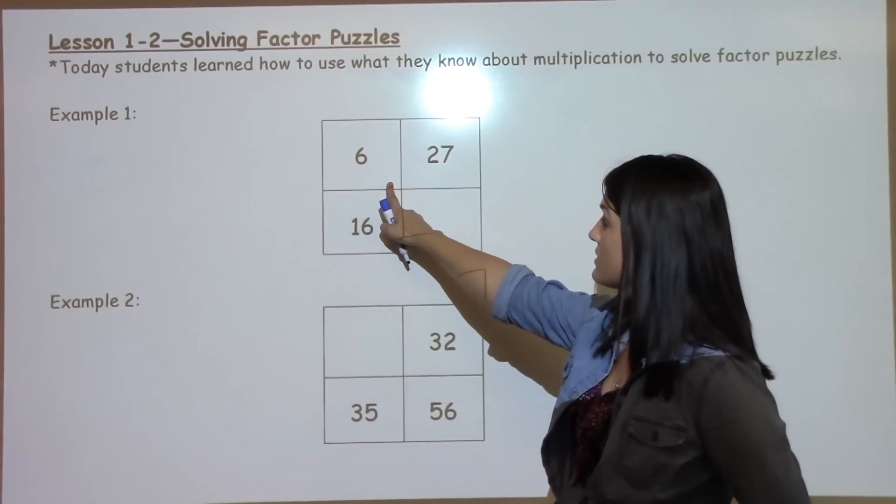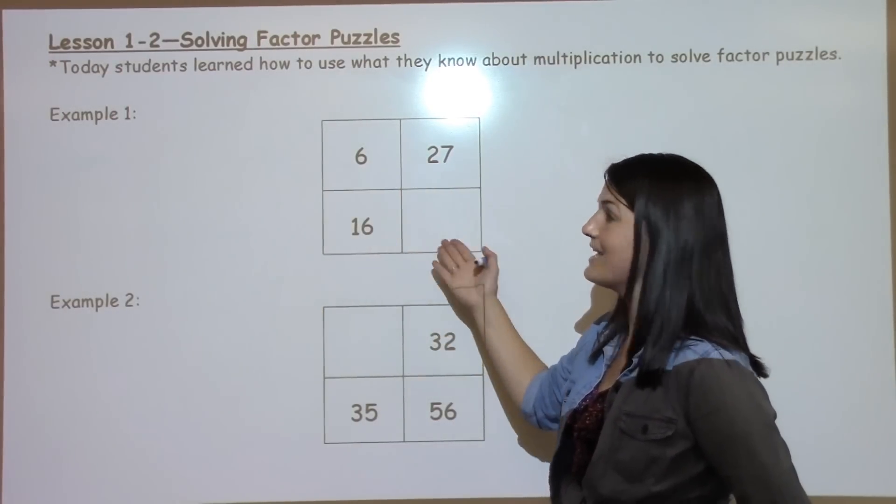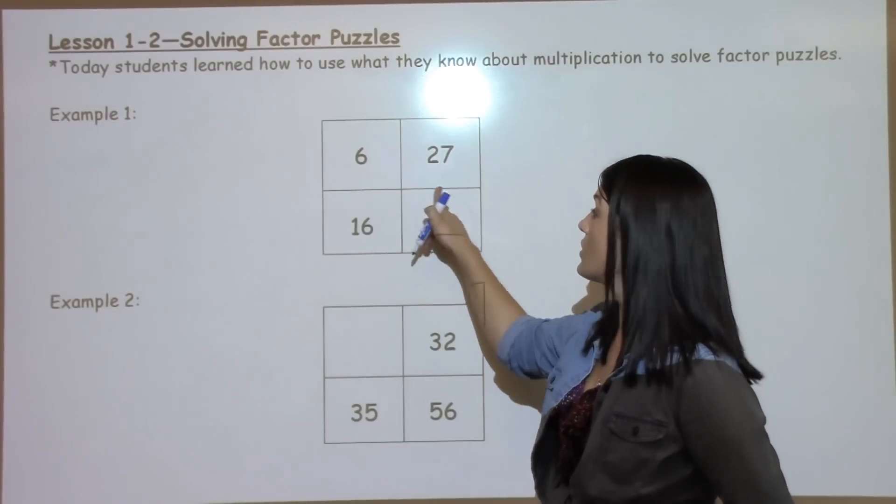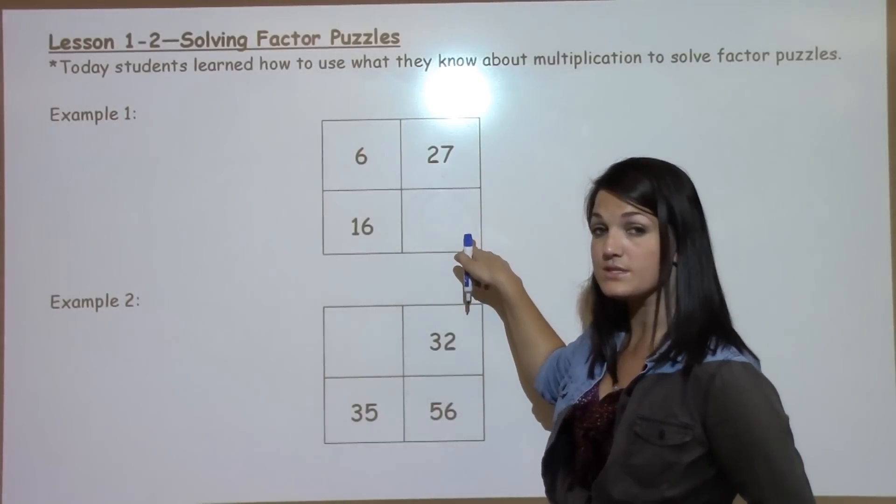So in this first puzzle we have 6, 27, 16, and then something missing. Our goal is to figure out what goes in this missing square.